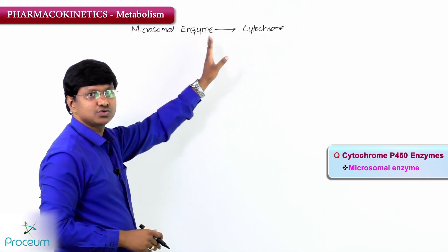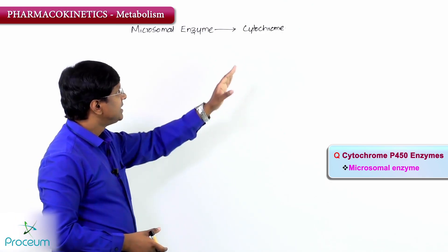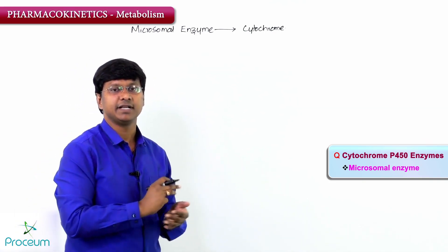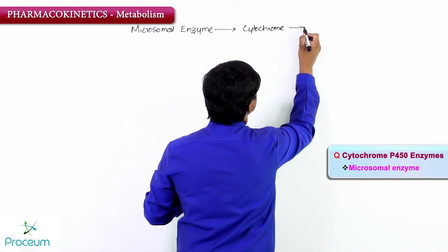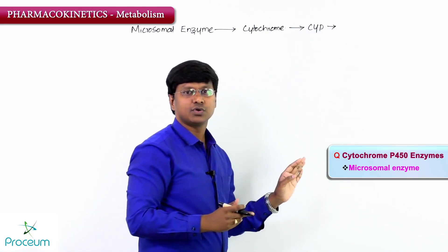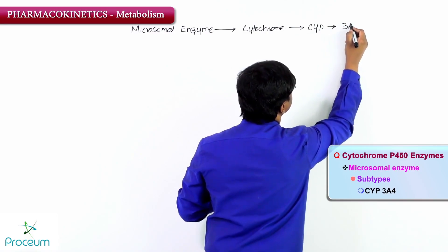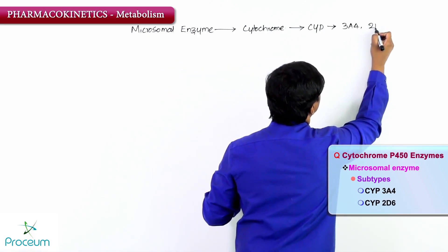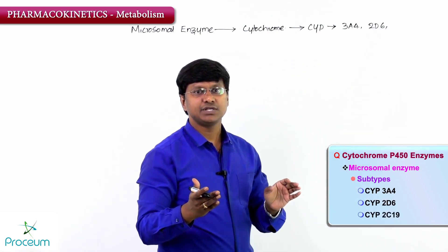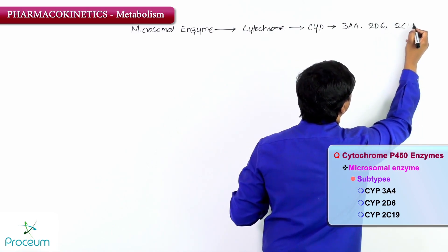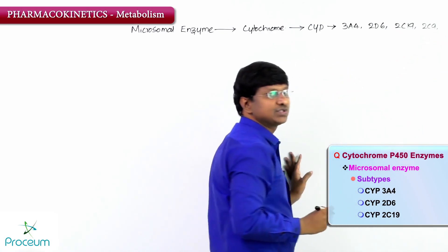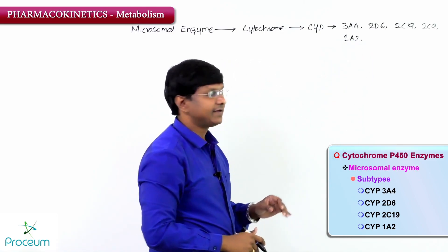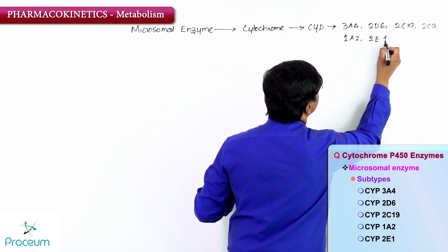The cytochrome system is a microsomal enzyme that causes the metabolism of drugs. The various subtypes of CYP useful for drug metabolism are: CYP3A4, CYP2D6, CYP2C19, CYP2C9, CYP1A2, and CYP2E1.